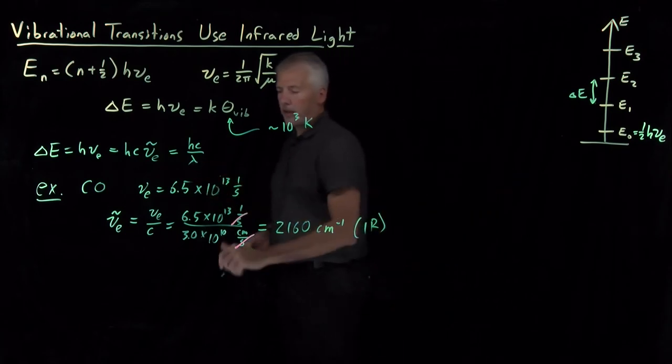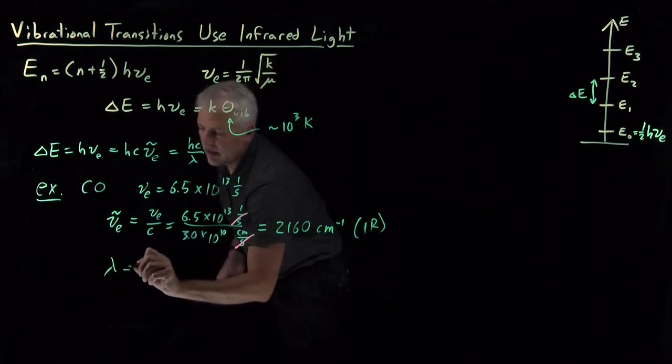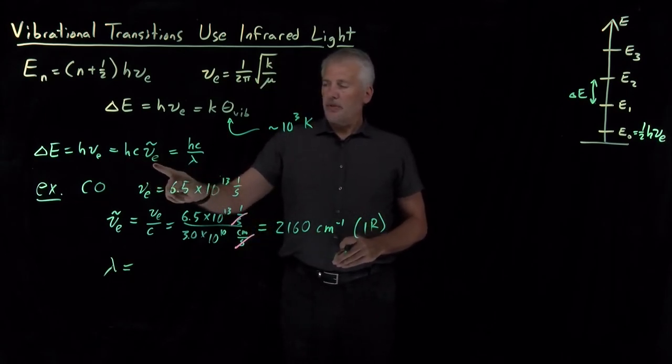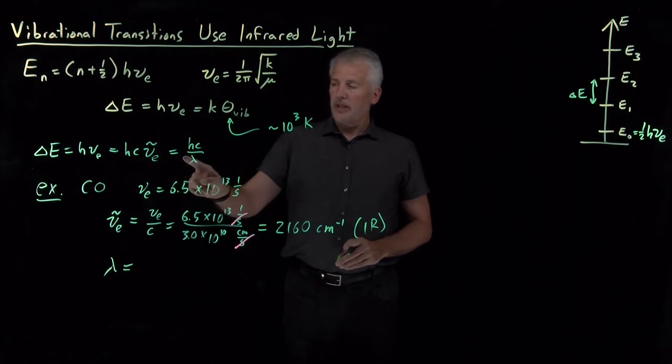In terms of wavelength, the wavelength of light needed. So, Hc times nu tilde is equal to Hc times 1 over lambda. So, the wavenumber and the wavelength are reciprocals of one another.